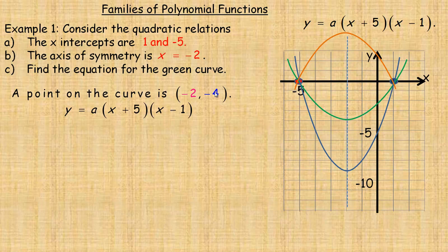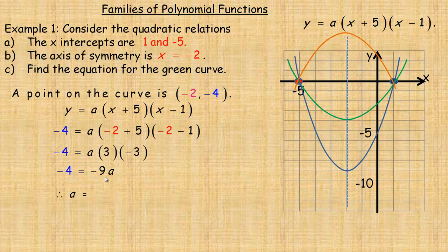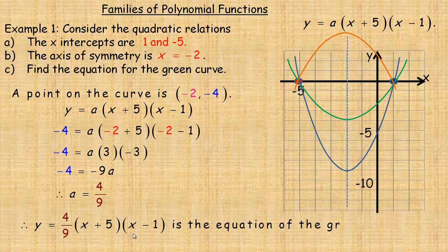We're going to take that point and substitute it into the equation. Negative 4 is the y, so we put negative 4 there, and negative 2 is the x, placed in both x positions. Solving for a: the first bracket gives positive 3, the second gives negative 3. Multiplying 3 by negative 3 gives negative 9, so negative 9a equals negative 4. Dividing both sides by negative 9 gives a equals 4 ninths — positive because a negative divided by a negative is positive. The equation is y equals 4 ninths times (x plus 5)(x minus 1).